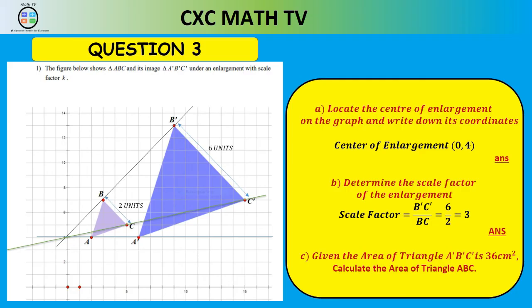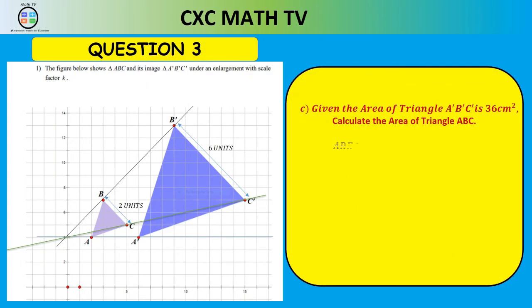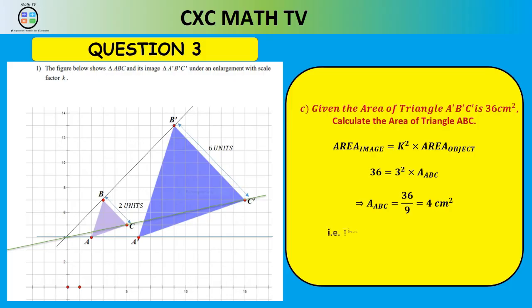For part C: the area of the image is K squared times the area of the object. So 36 equals 3 squared times the area of ABC. 3 squared is 9. Dividing both sides by 9 gives the area of ABC equals 36 over 9, which is 4. So the area of triangle ABC is 4 cm².